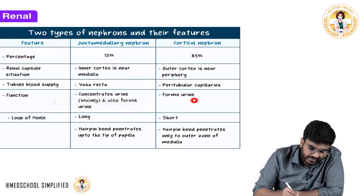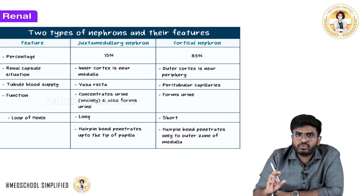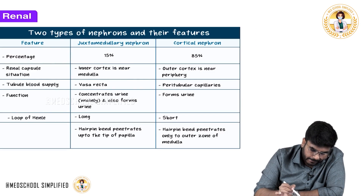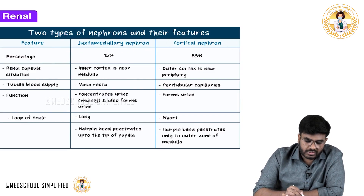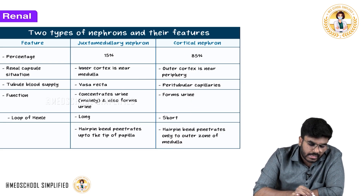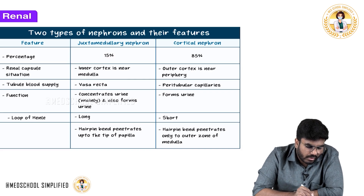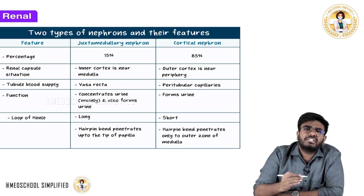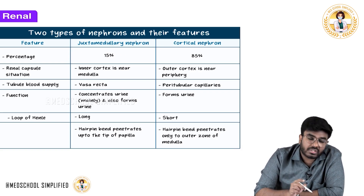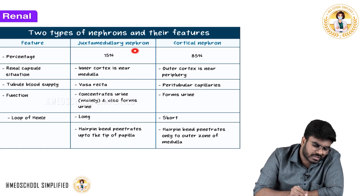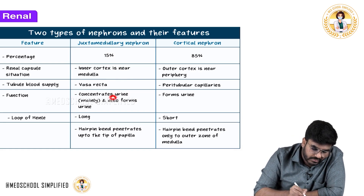Cortical nephrons mainly form urine and are surrounded by peritubular capillaries. Juxtamedullary nephrons are only 15% in number, with the Bowman's capsule located just to the side of the medulla, surrounded by vasa recta. The function of juxtamedullary nephrons is to concentrate the urine.